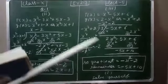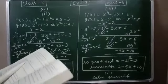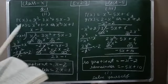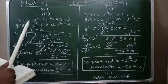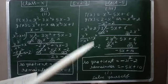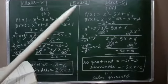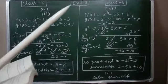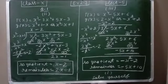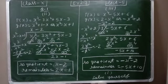Let us read the first question: divide polynomial P(x) by polynomial G(x). This is polynomial P(x) and this is polynomial G(x). We have to divide and find the quotient and remainder in each of the following. This type of question you already studied in ninth class — how to divide a polynomial by another polynomial.